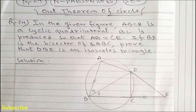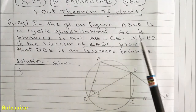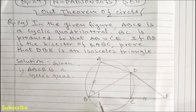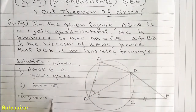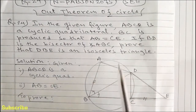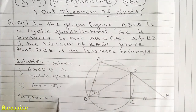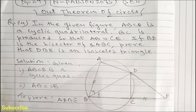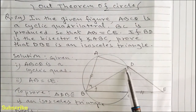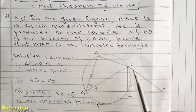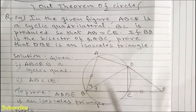So dear students, let's do the solution. We are given that ABCD is a cyclic quadrilateral. BC is produced so that AB is equal to CE. To prove triangle DBE is an isosceles triangle, we will show triangle ABD and triangle CDE congruent.